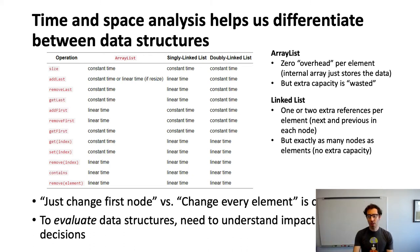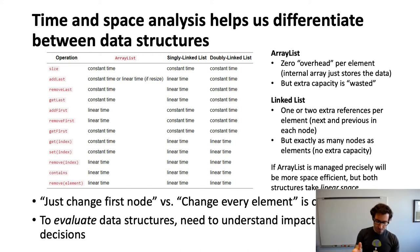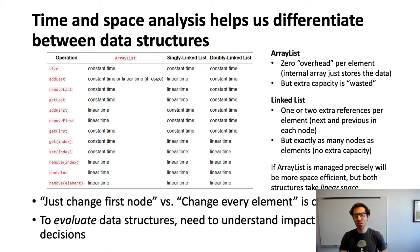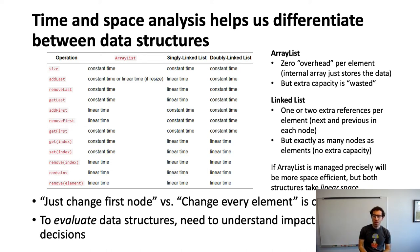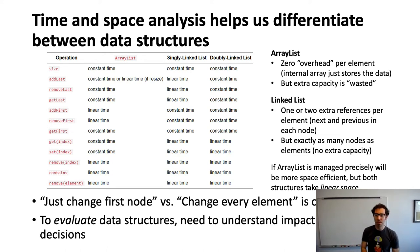While there are these differences, and we can say that if an array list is managed precisely — if the internal array is exactly the size for the data we're storing — the array list is going to use less space and be more space efficient. But in both cases, we'd say these structures take linear space, meaning the amount of space is linear in proportion to the number of elements they're storing.